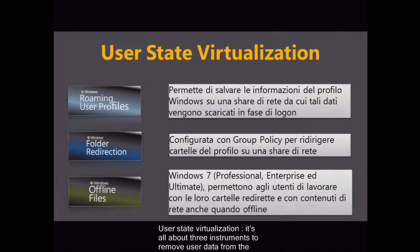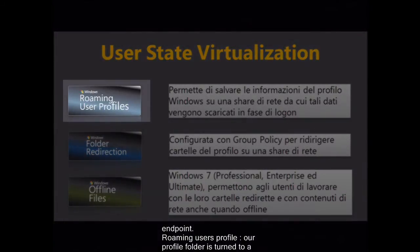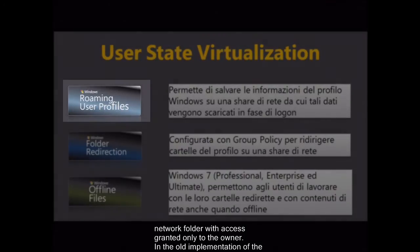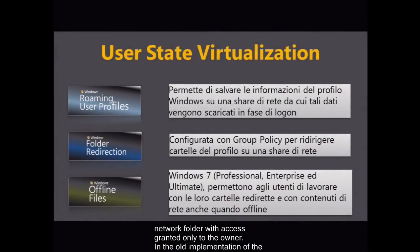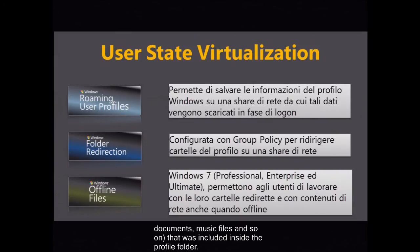User state virtualization is all about three instruments to remove user data from the endpoint. Roaming user profiles: our profile folder is turned into a network folder with access granted only to the owner. In the old implementation of user profiles, there were a lot of problems related to the amount of data — pictures, documents, music files, and so on — that was included inside the profile folder.